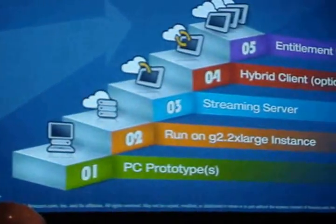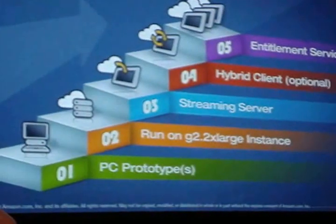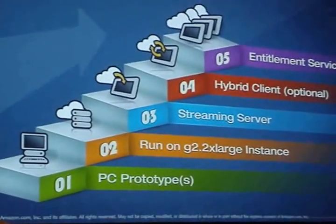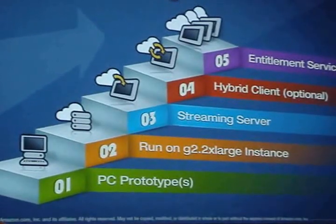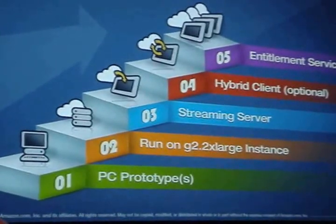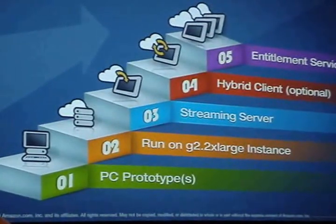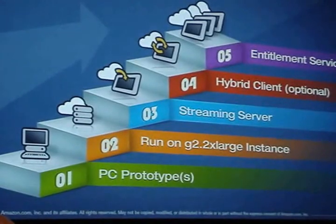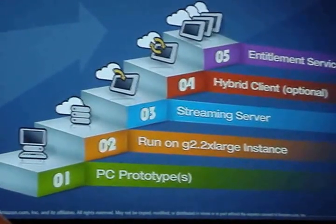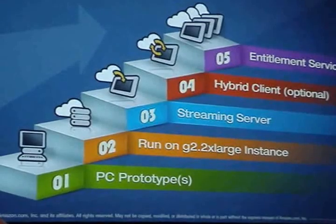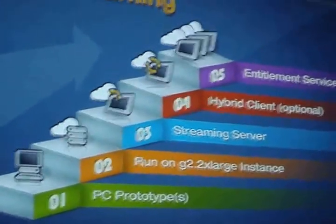The fifth step, which will be required to ship your game but which we didn't have to do for our demo, is to build an entitlement service that describes who is allowed to play your game — who is authorized to perform this streaming. It gives your game the ability to scale out. With that, you also provide an installer that gets deployed to AppStream, and then as more players play, AppStream will automatically create more instances for them. So five steps to get up and running on AppStream.